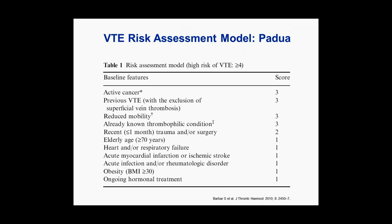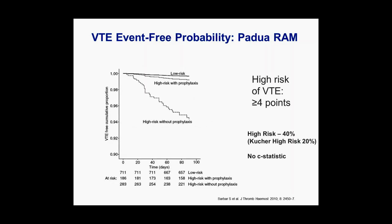Many are familiar with the Padua model, which refined the Kutcher model using a similar scoring system but adding exposing factors such as heart failure, respiratory failure, acute myocardial infarction, stroke, and acute infection. Like the Kutcher model, a score of four made a patient eligible for pharmacologic thromboprophylaxis. In a prospective management study using the Padua risk model, high-risk patients who received thromboprophylaxis had the same VTE risk profile as low-risk patients who did not receive prophylaxis, while high-risk patients who did not receive prophylaxis had a statistically significant increase in VTE risk.